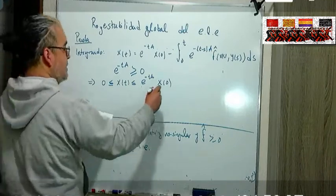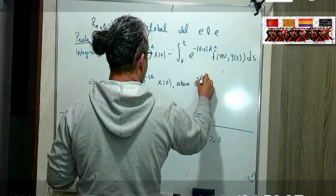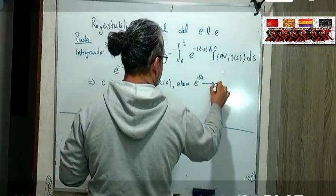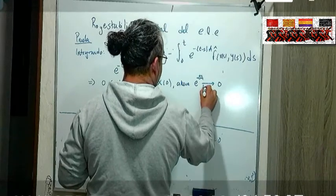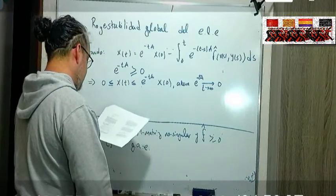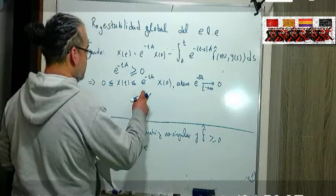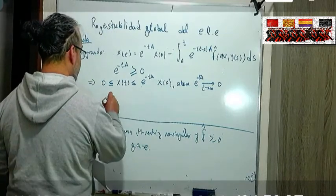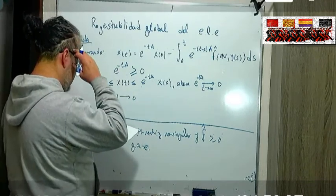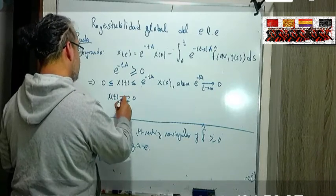Porque esto lo menos que puede valer es 0. Ahora qué pasa, e a la menos A t A lo podemos hacer cercano a 0 siempre que t crezca. Entonces si t crece, ese término se va a ir a 0 y entonces x de t va a tender hacia 0 conforme t tiende a infinito.